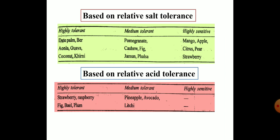Now let us talk about types of fruit based on their relative salt tolerance. They are categorized into three categories: highly tolerant, medium tolerant, and highly sensitive. Highly tolerant fruits include date palm, ber, amla, guava, coconut, and khirni. Medium tolerant fruits include pomegranate, cashew, fig, jamun, and falsa. Highly sensitive fruits include mango, apple, citrus, pear, and strawberry.